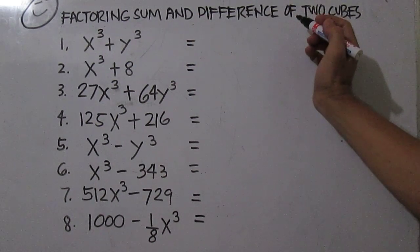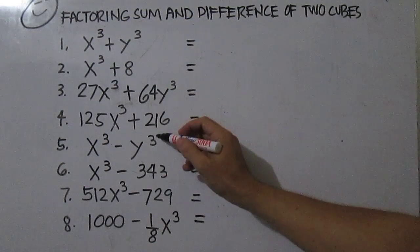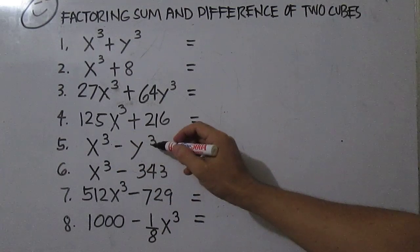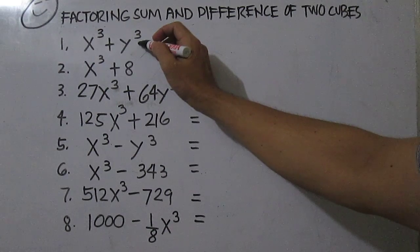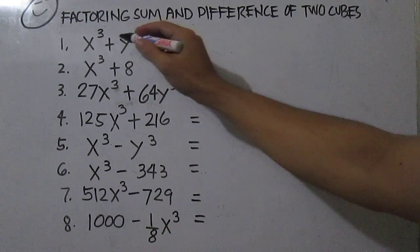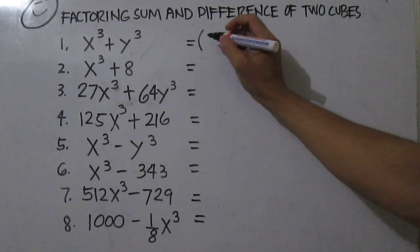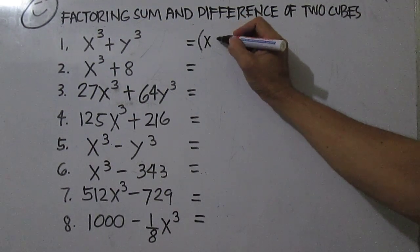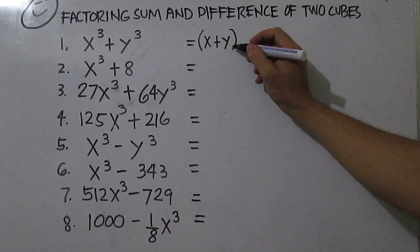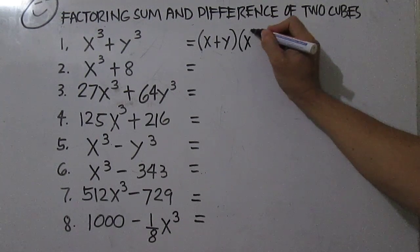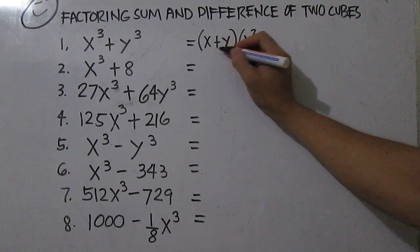Factoring sum and difference of two cubes. This is an example of sum of two cubes, and this is also an example of difference of two cubes. To factor the sum of two cubes, find the cube root of the first term and the second term. The cube root of x cubed is x, and the cube root of y cubed is y. From this factor, you square the first term, then write the opposite of the product of the first and second term.